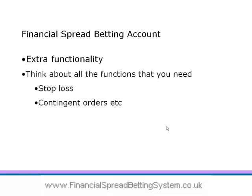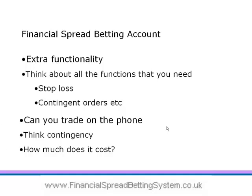Think about all the additional functions that you want your account to perform. Stop losses are a must in my opinion, but you have the choice whether to go with automatic or guaranteed stops. Does the account offer guaranteed stops? If yes, how much are they? Write down everything you want your account to perform, like contingent orders, and tick them off as you review each account. You'll probably all be trading online, but think about contingency — what if you can't get access to the internet and need to make a trade? Can you phone your trade through, and if so, how much does it cost? As soon as you open your account, put their telephone number into your mobile, because you might need it at some point.